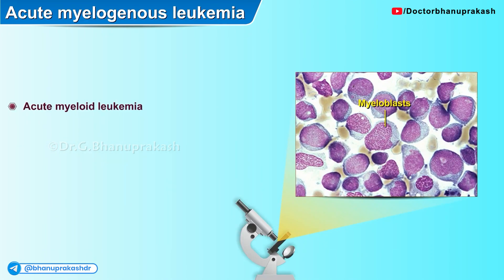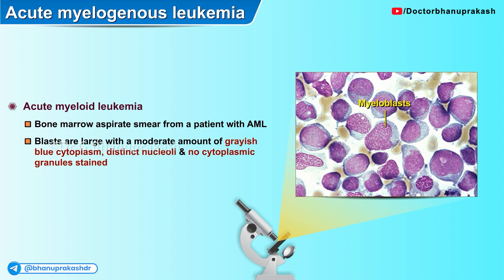Here is another image showing bone marrow aspirate from a patient with AML. The blast cells seen here are quite large with a moderate amount of grayish blue cytoplasm. Thin nucleoli can also be appreciated, and there are no cytoplasmic granules that can be appreciated in this image.